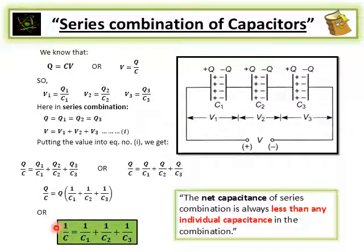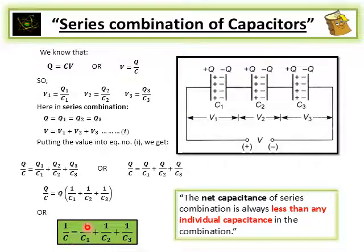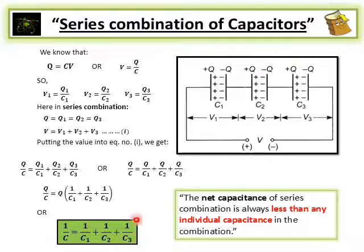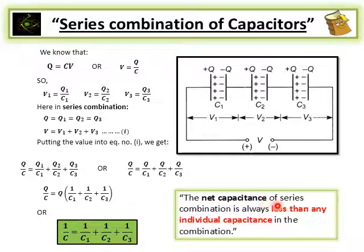This formula for the series combination shows that the net capacitance of a series combination is always less than any individual capacitance.